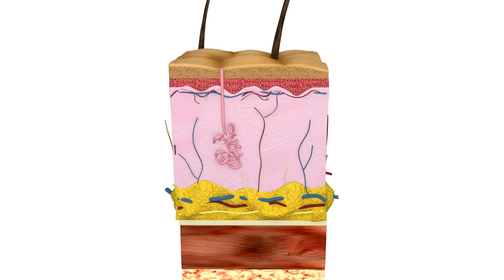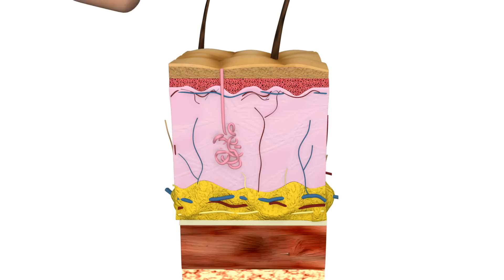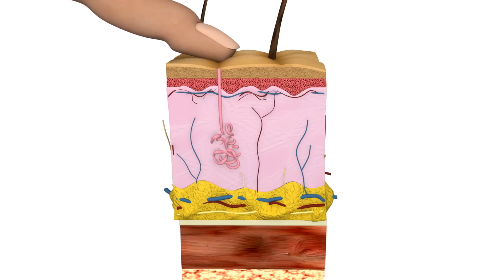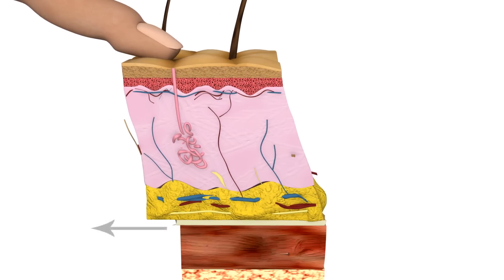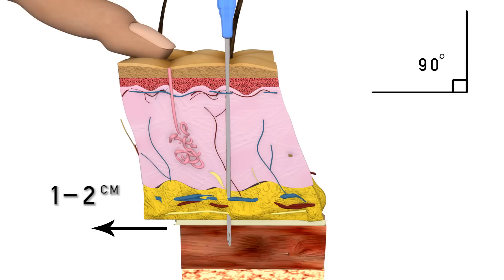The Z-track route is used when the medication can stain or cause skin irritation. For the Z-track technique, the skin is pulled to one side, which moves the subcutaneous tissue approximately one to two centimeters. The needle is inserted at a 90 degree angle and after aspiration, the medication is inserted into the muscle, whereupon the nurse waits 10 seconds.